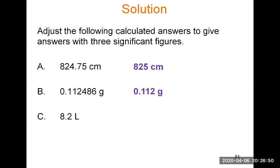For 8.2 liters rounded to three significant figures, this may be tricky: the number only has two sig figs, but we need three. We cannot add precision that isn't there — this reflects insufficient precision in the original number. We count the 8 and the 2, and we need one more significant figure. We add a zero after the decimal point to get 8.20, which has three significant figures because the trailing zero after the decimal point is significant.